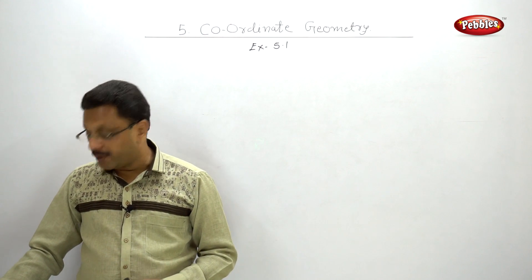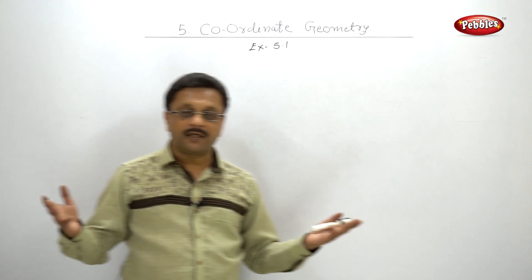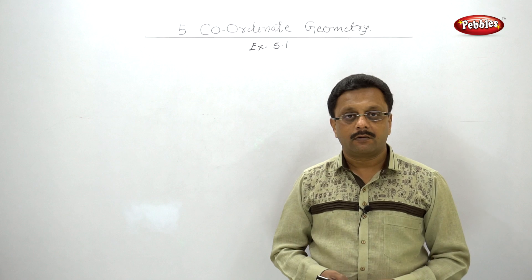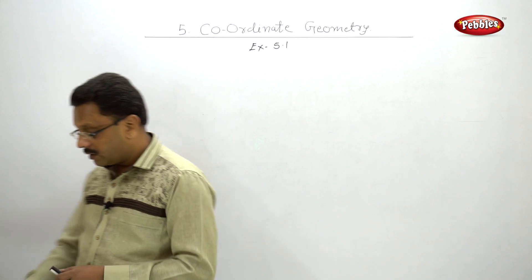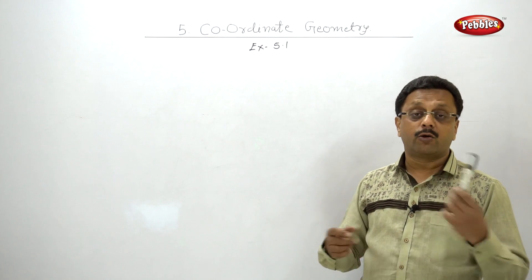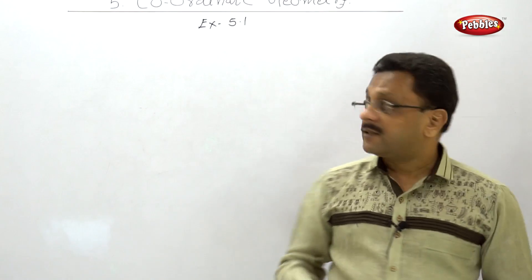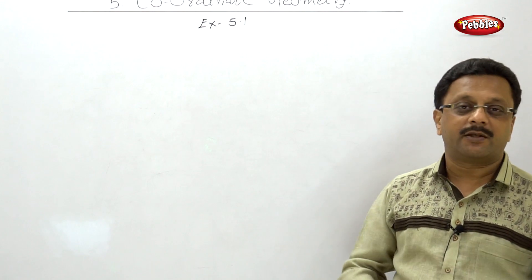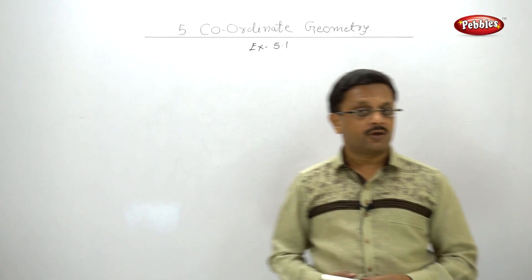Next: if the slope of the line joining points (k, -3) and (4, 5) is 1/2, find the value of k. Two points are given and the slope is given directly. Apply m = (y2 - y1) / (x2 - x1), where m is known and k is unknown. Please pause and solve. Exercise 5.1 was very easy — now let us start the next topic: equation of a line. Thank you.